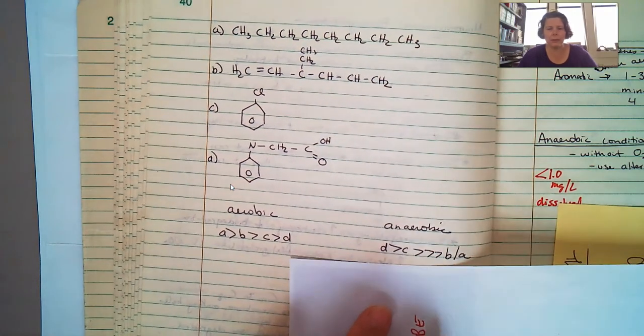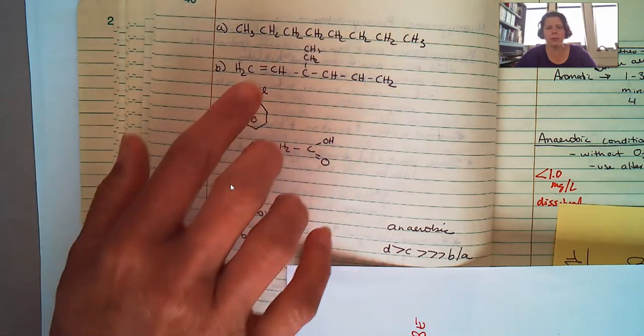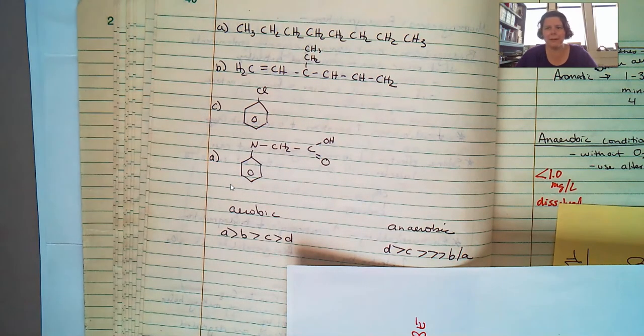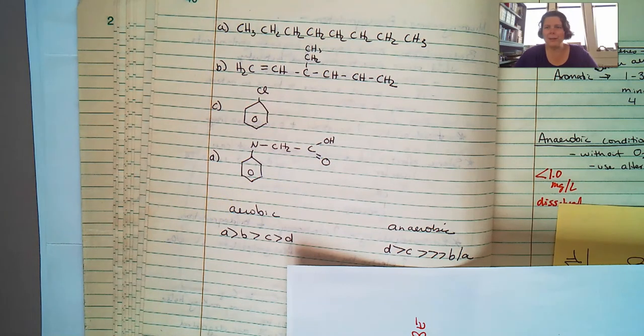Under anaerobic conditions, D is probably the best, and then C, which is much greater than these two over here. So that's the results from our aerobic and anaerobic biodegradation. I'll start the lecture now. See you later.